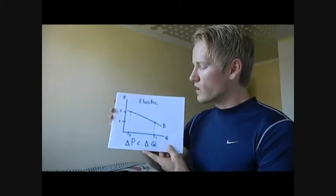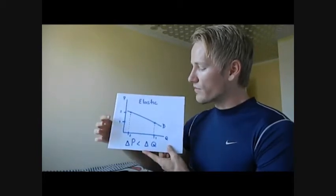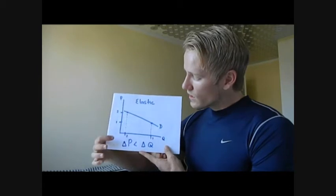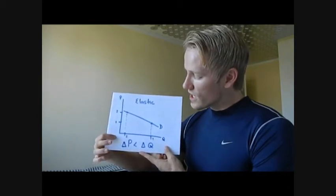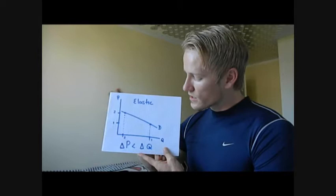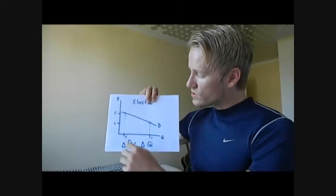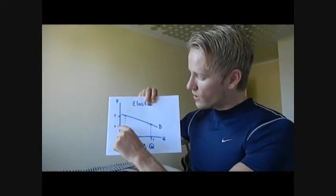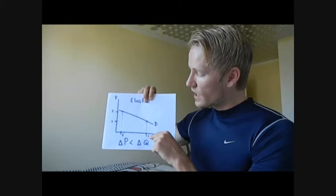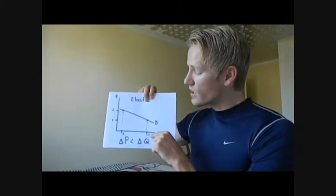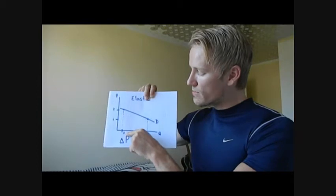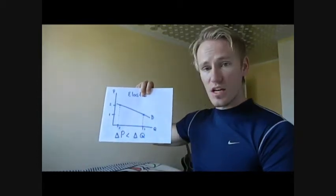Say that the price of a medium coffee goes from $1 to $2. The percentage change in price is a lot smaller than the change in quantity. So here we have $1 and this quantity demanded. As soon as the price of this coffee jumps up to $2, we see that the quantity demanded decreases substantially.